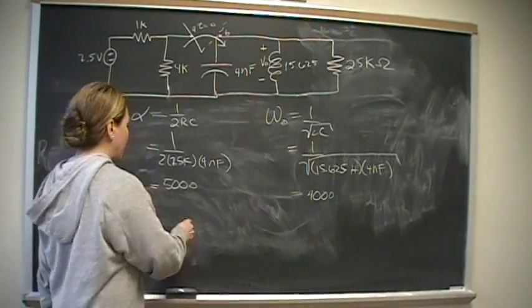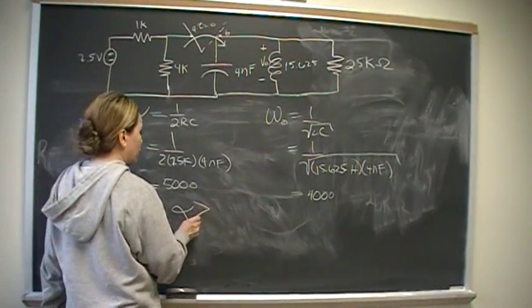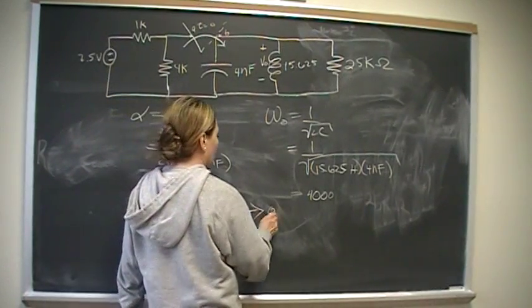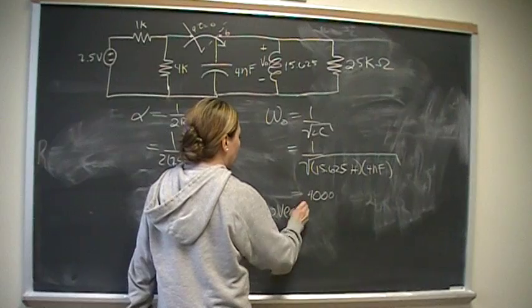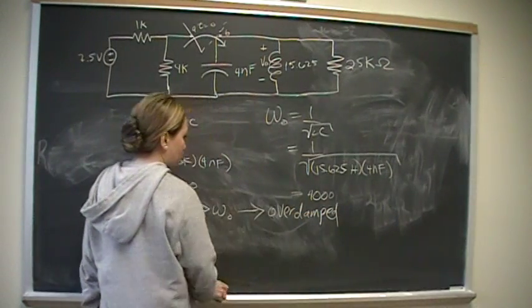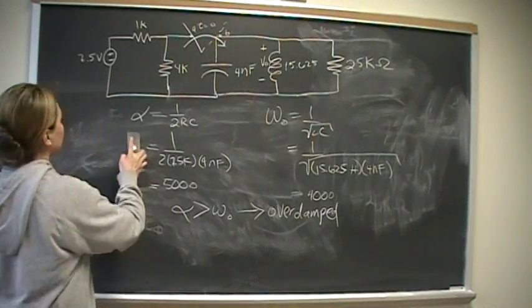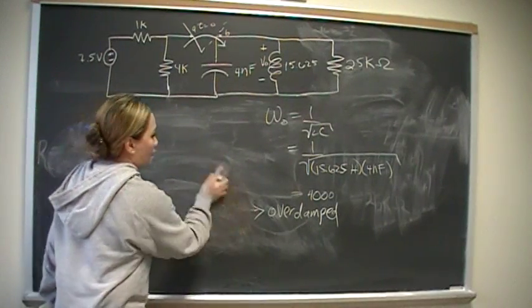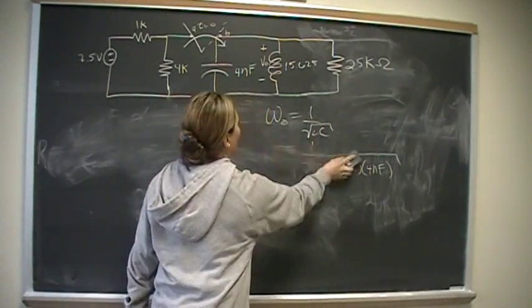Okay, so we have a case where alpha is greater than omega naught. So therefore, the system is overdamped, and we know what our step-response equations will be. So, let's pull it out and put it to the side and work towards that.